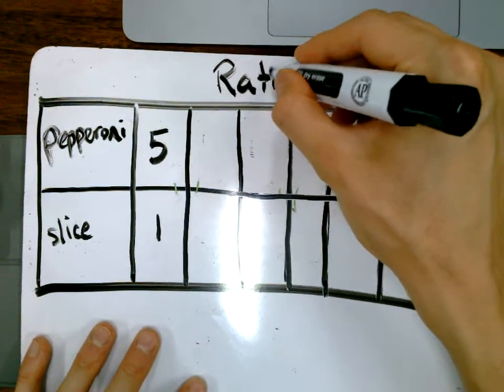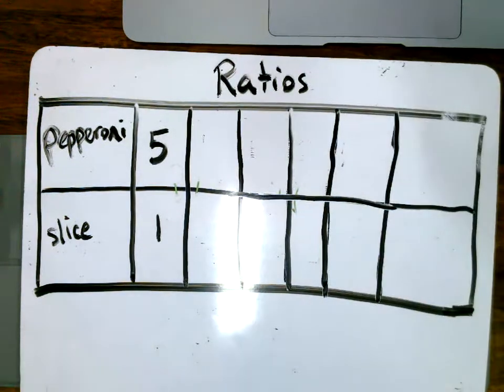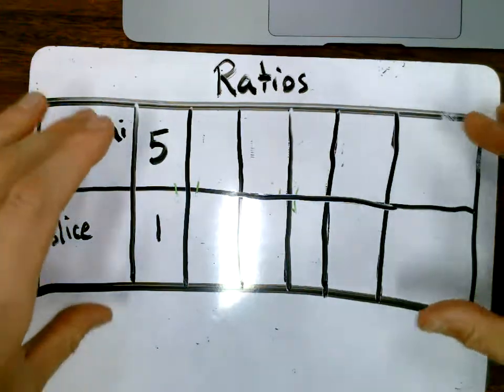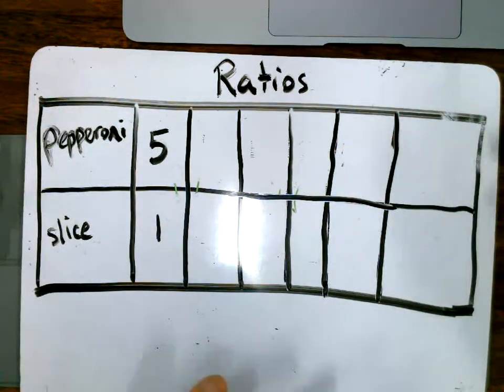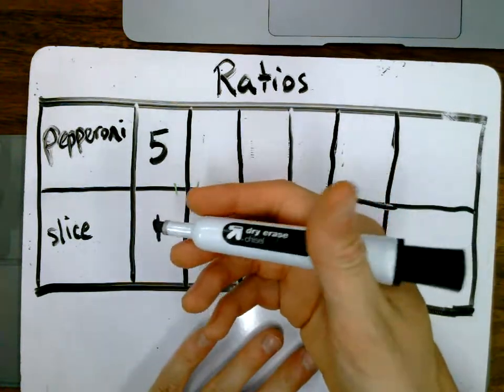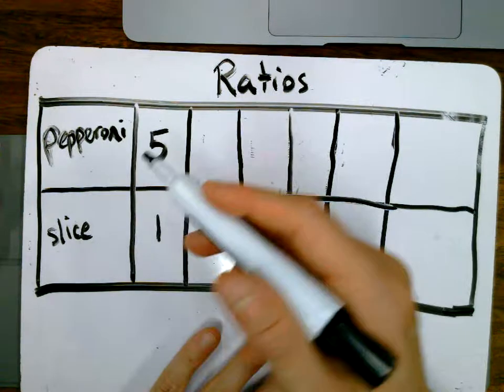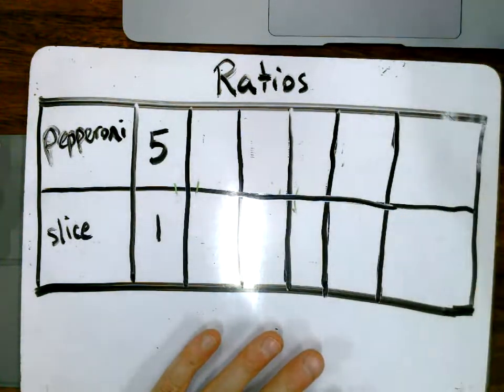Okay, we're talking about ratios and we are going to use a table to help us make sense of ratios and see the different relationships between them for this one particular ratio. Although I am a vegetarian, for the sake of this video I am acknowledging that some people like pepperoni on their pizza.